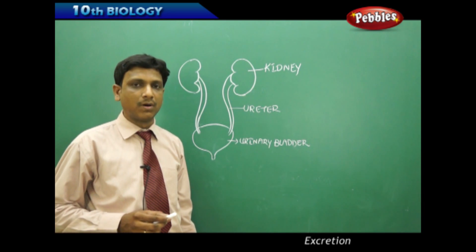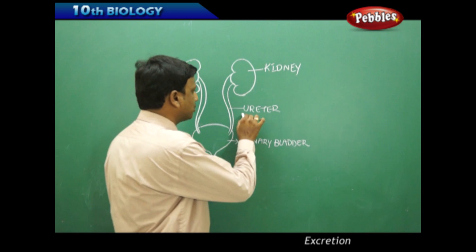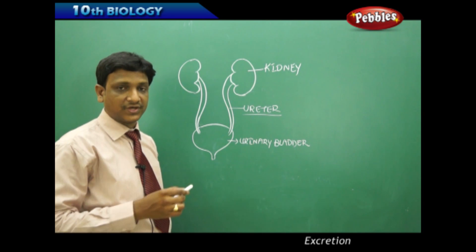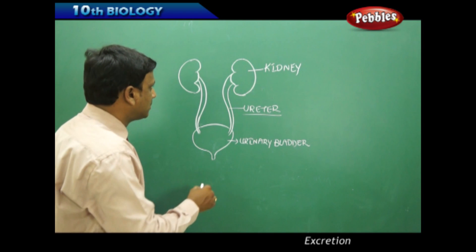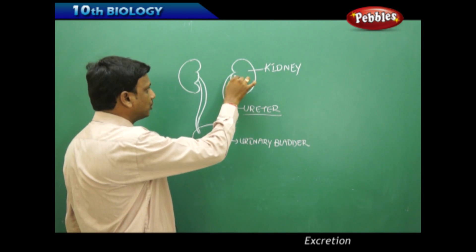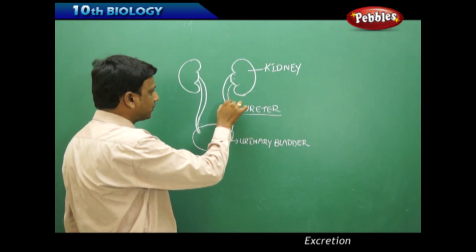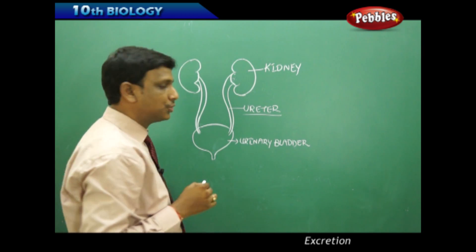Now let us look at another important part of our excretory system, the ureter. We studied about the structure of kidney, the functional units of kidney—the nephrons. After the formation of urine, the urine that is formed here is collected into long tubes called ureters.